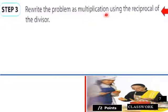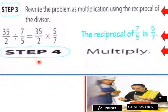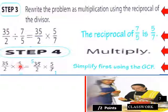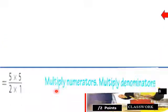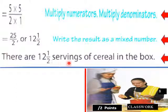To do this division, rewrite as multiplication using the reciprocal of the divisor — flip seven over five to get five over seven. So it becomes thirty-five over two times five over seven. Cancel: seven goes into thirty-five five times, leaving five times five over two, which is twenty-five over two, or twelve and a half. There are twelve and a half servings of cereal in the box.